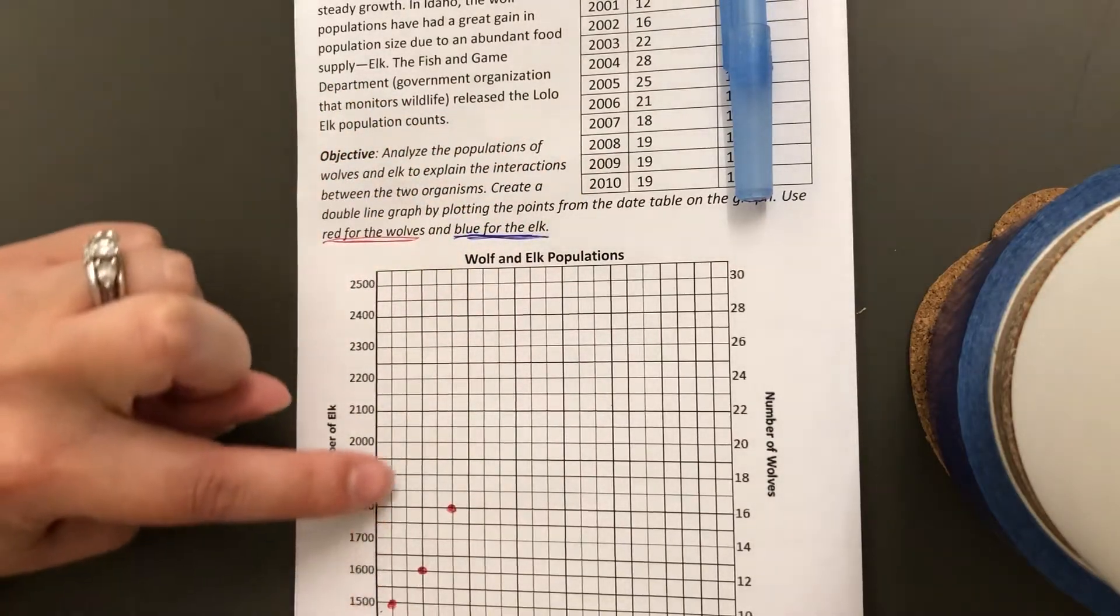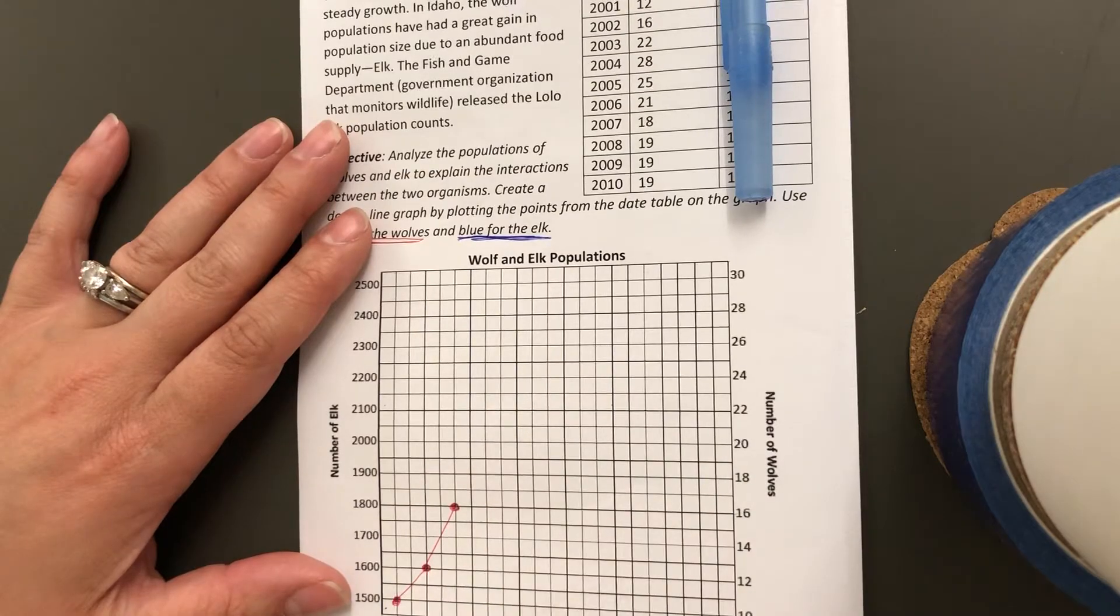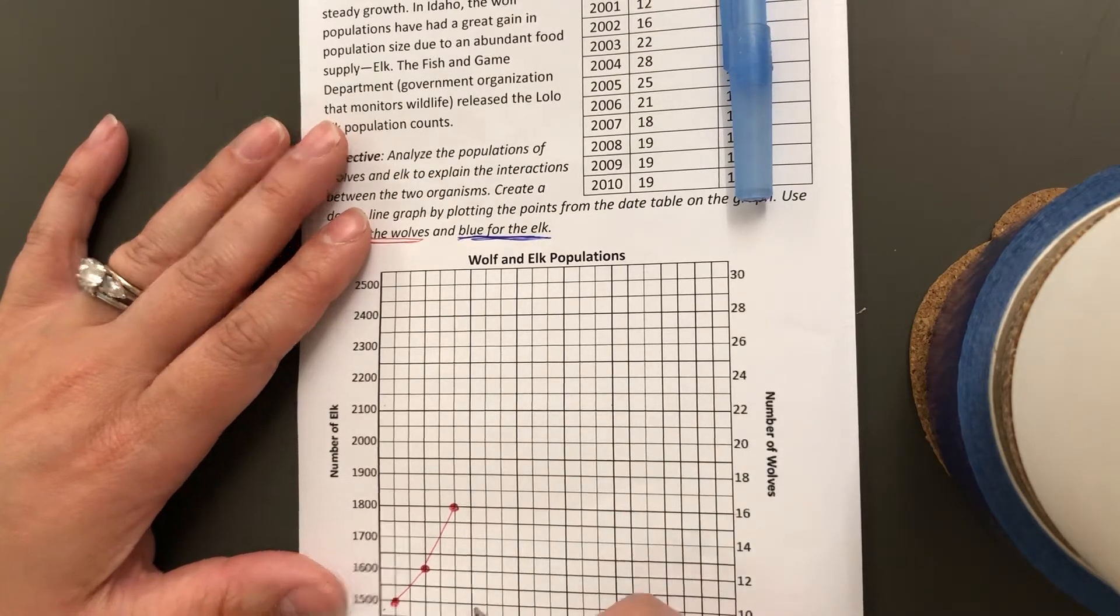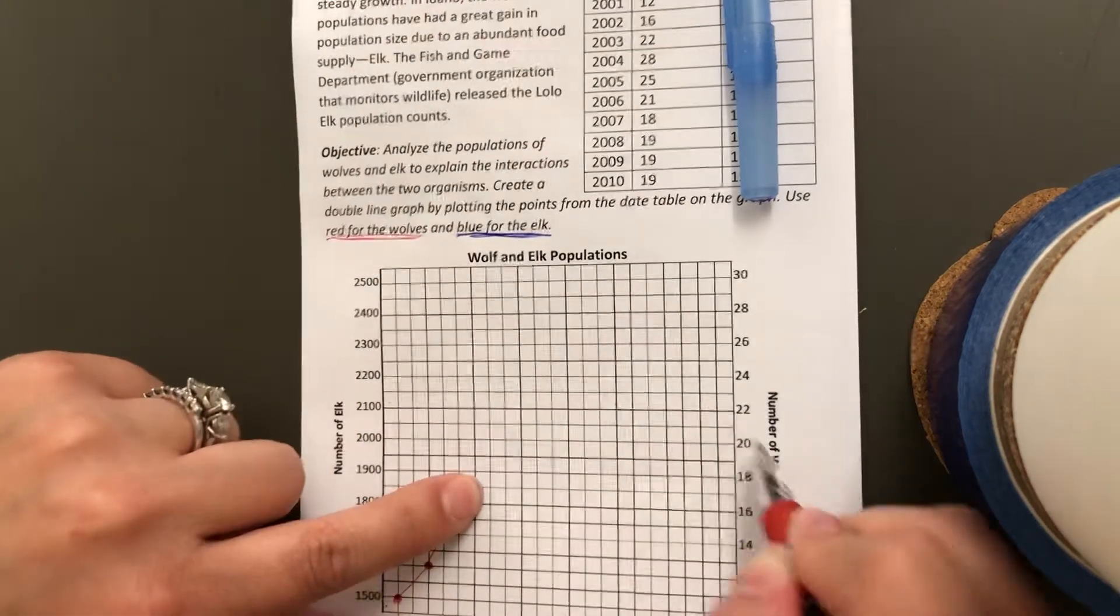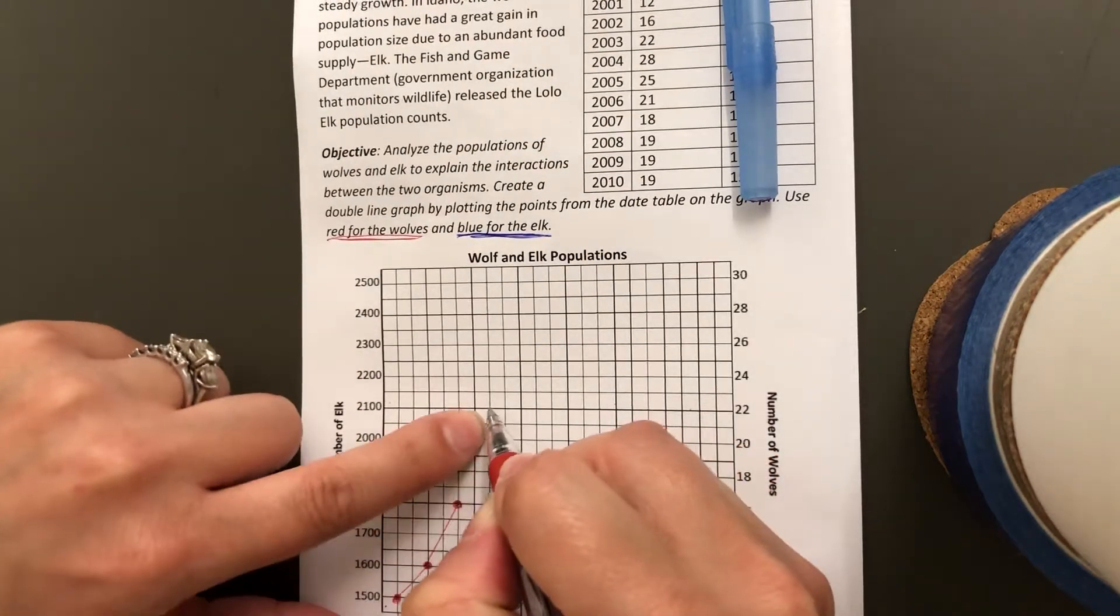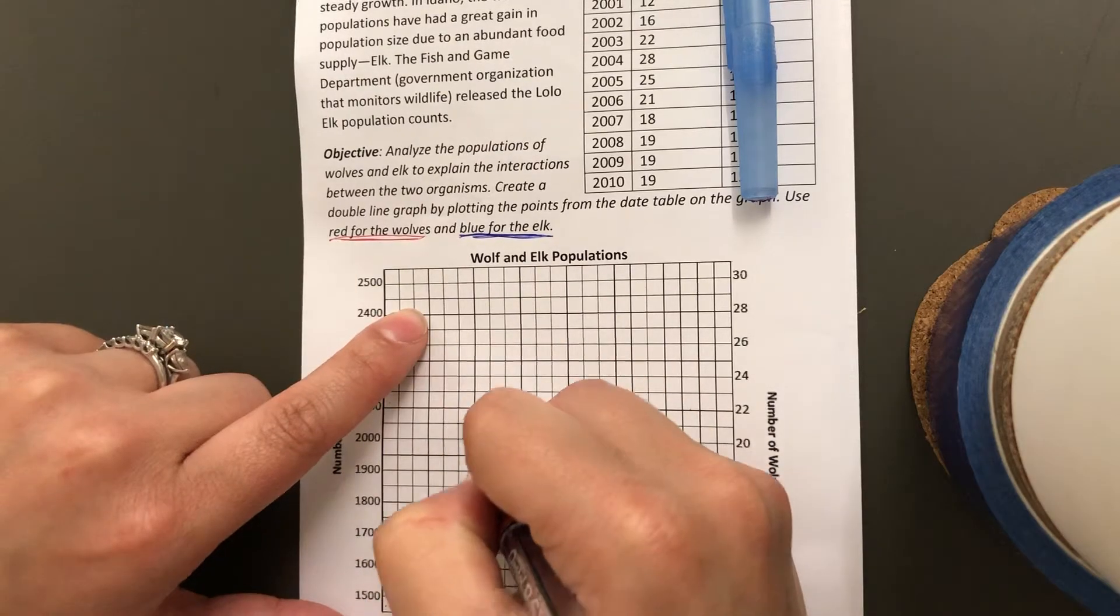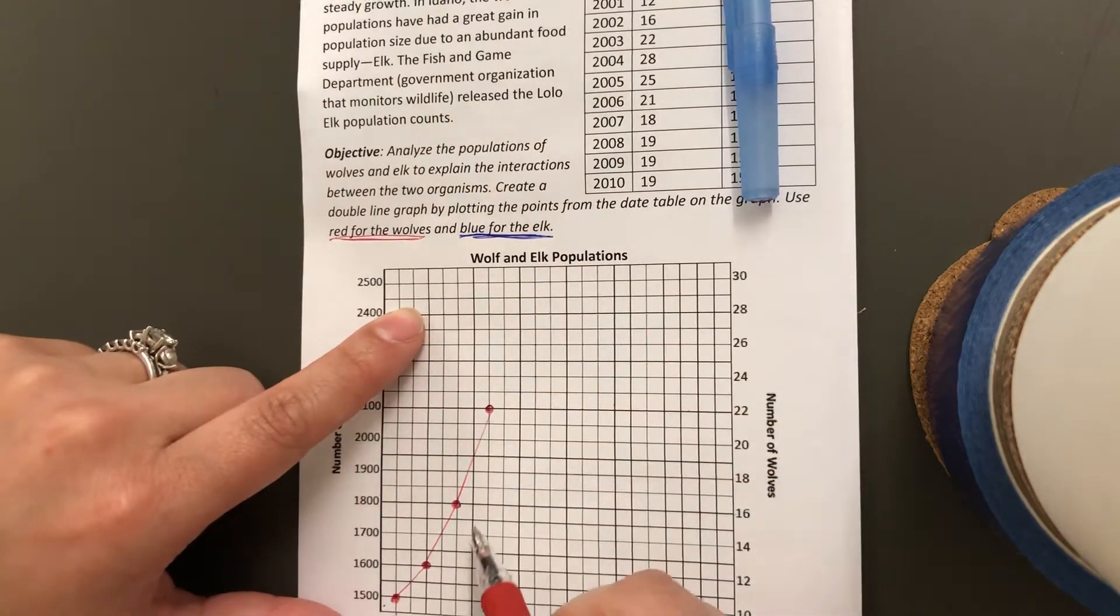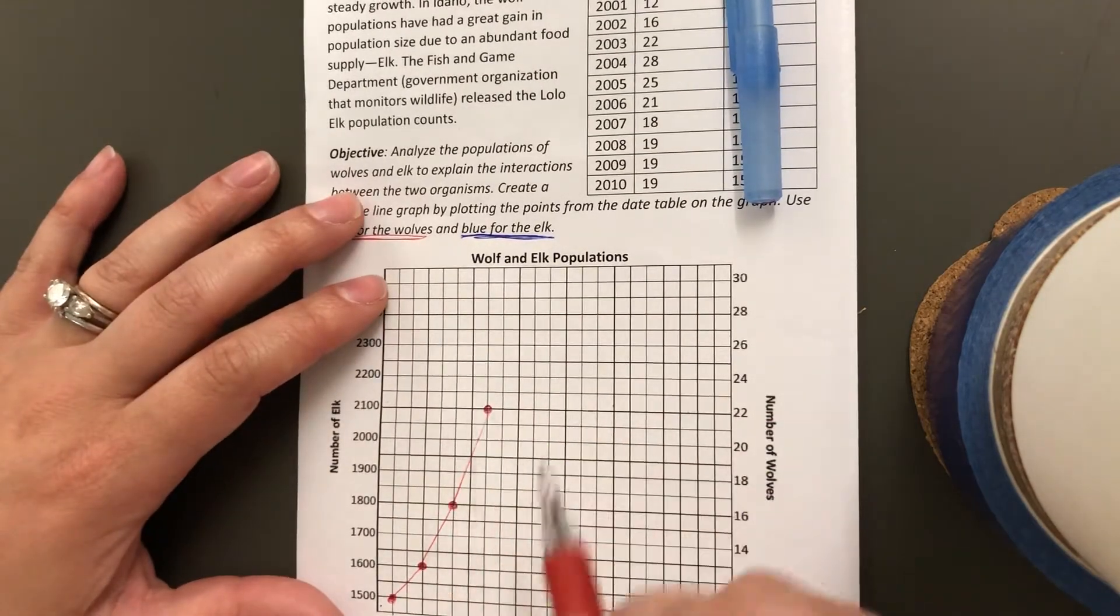When I'm done plotting all of those points, I'm going to just use a line to connect the points. I'll do one more—2003 is 22—so I'm going to have a line going the whole distance, however it goes up or down.